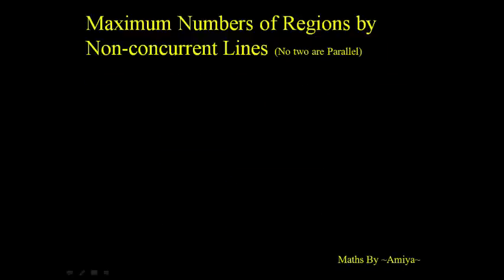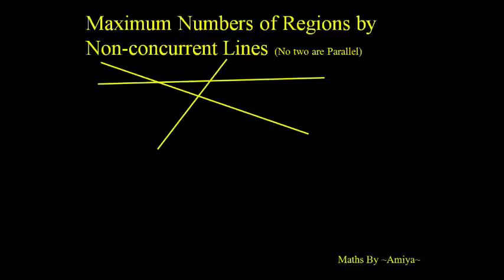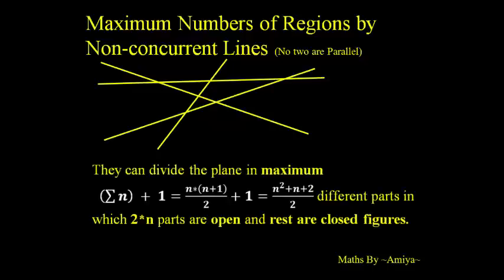Maximum number of regions by non-concurrent lines if no two are parallel: if we have two lines, then we have four regions, all open. If we have three lines, then the number of regions is seven, in which six are open and one is closed — the center region is closed. So we can generate a formula.